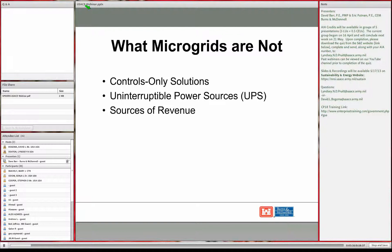In the industry, microgrids are getting thrown around as a trendy phrase, and a lot of people try to apply the word to things it really isn't. One misconception is that all you have to do to have a microgrid is add more controls. It's very rare for someone to have a system that can be a microgrid and just lacks a control to do it, because in that case they could already have had a manual-only microgrid.